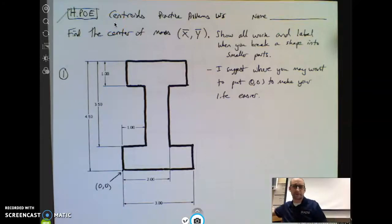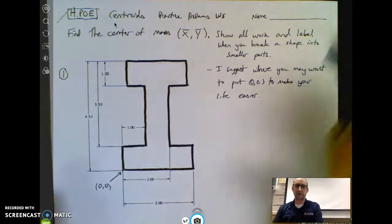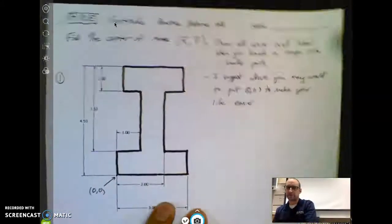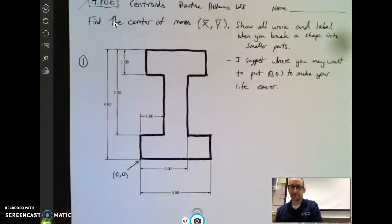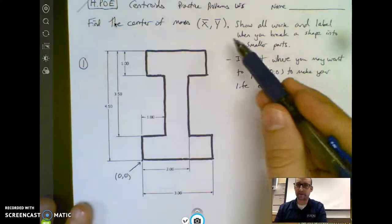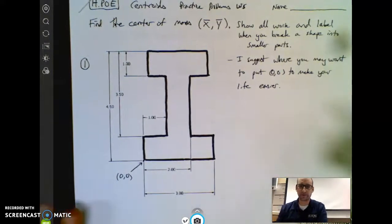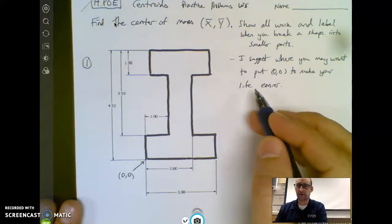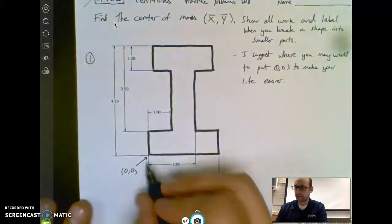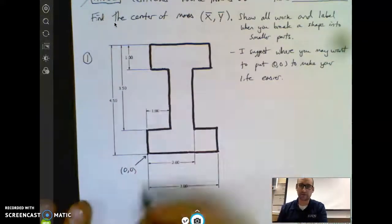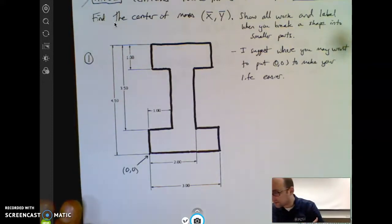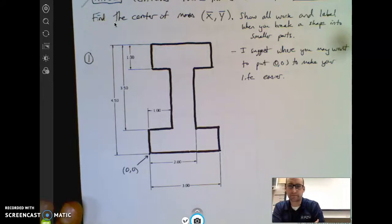Okay engineering folks, here's a video on how to do some centroids practice problems. This is your worksheet with three problems. I figured we could do the first one together and then you can do the other two. Show all work and label when you break a shape into smaller parts. I suggest you may want to put zero zero in the leftmost bottom corner to make your numbers easier. You don't have negatives and stuff like that.